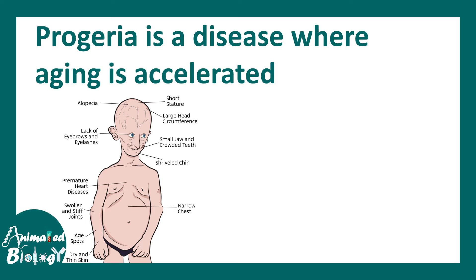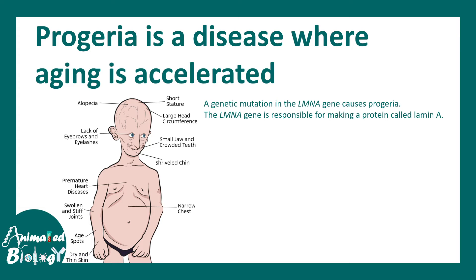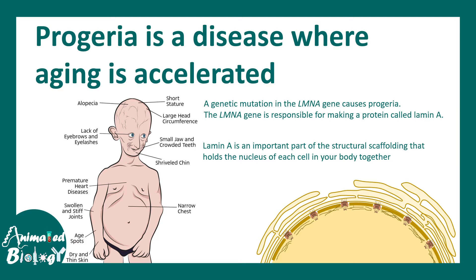Taking the example of progeria, a disease where aging is accelerated, we see there is a genetic mutation in the LMNA gene, or lamin A gene. This gene gives rise to the intermediate filament lamin A, which works like a supportive scaffold for the nuclear envelope. When there is a mutation in the lamin A gene, the product is not formed properly, there is a breakdown of the nuclear lamina, and as a result several cells — especially stem cells — die, leading to accelerated aging.